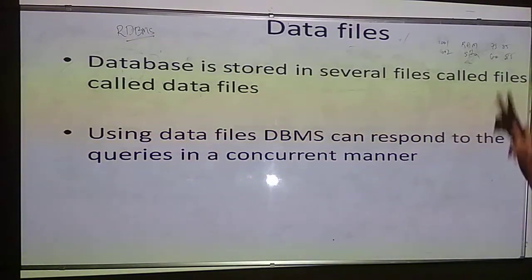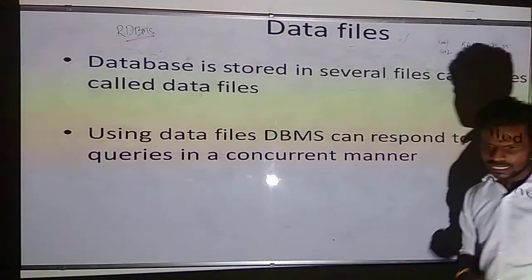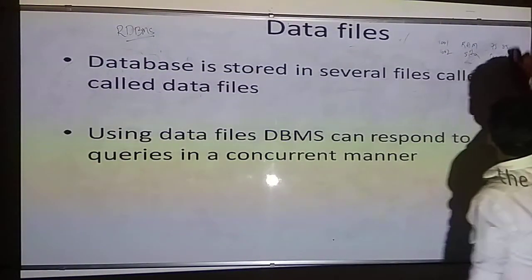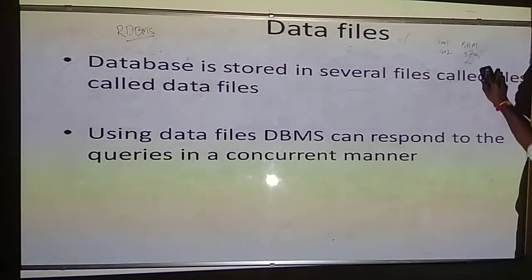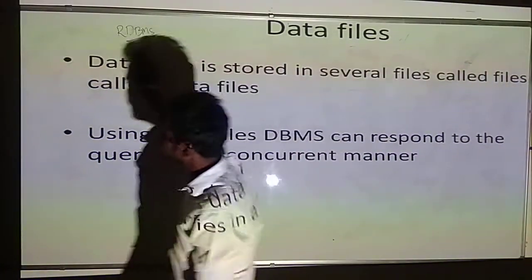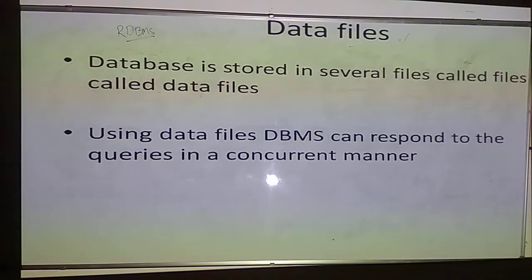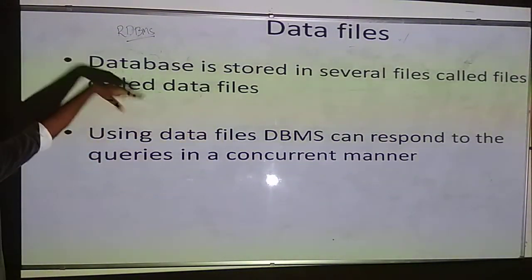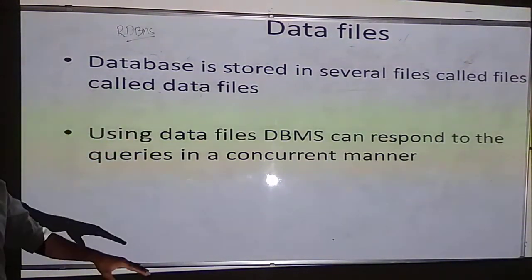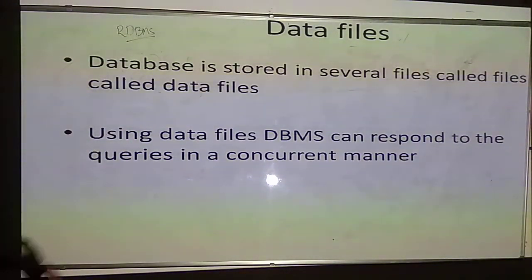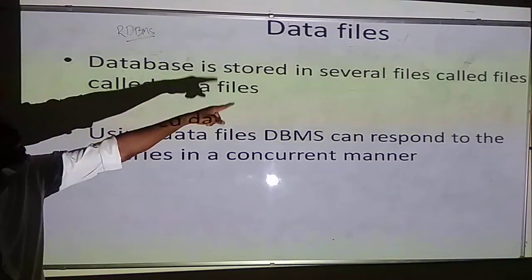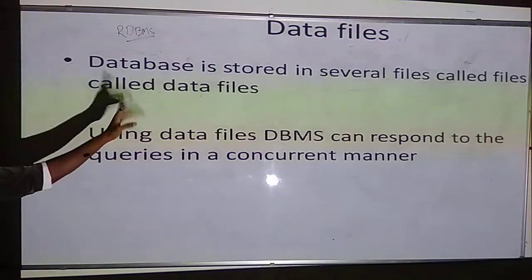In the case of your database, while you are accessing the data from your database, every user thinks it is a single piece from which we get the information, but it is not. In order to access data from your database, the data needs to be stored in data files. Every data will be stored in the form of files, and every file will have its own ID. We need to search for that particular file to give the required data to the user. The database is stored in several files called data files.